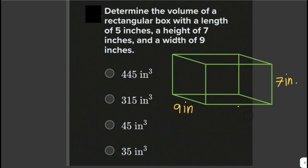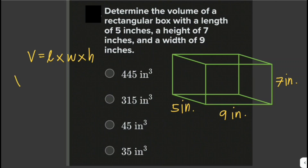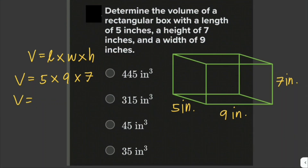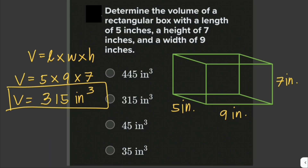We just have to multiply everything together. The volume is equal to 5 times 9 times 7. That gives us 45 times 7, which is equivalent to 315 cubic inches. So the volume of the rectangular box is 315 cubic inches.